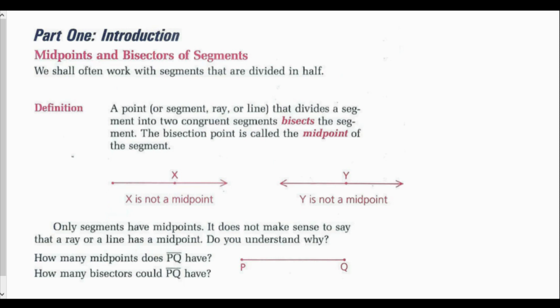Midpoints and bisectors of segments. We shall often work with segments that are divided in half. Definition: a point or segment, ray, or line that divides a segment into two congruent segments bisects the segment. The bisection point is called the midpoint of the segment. This is one of our first definitions, and it will be extremely beneficial if you memorize the definitions the book gives us.